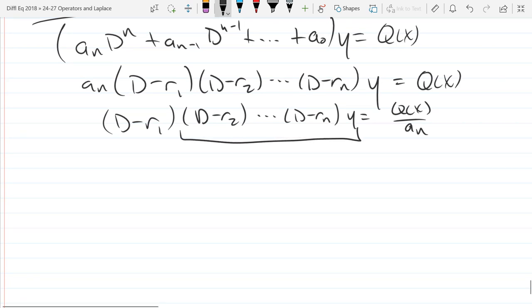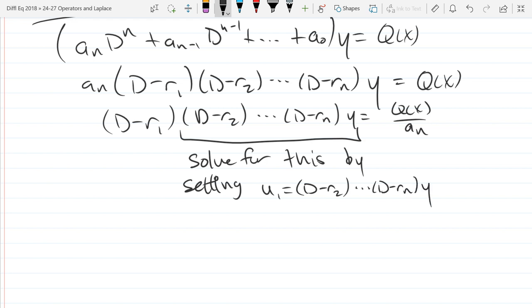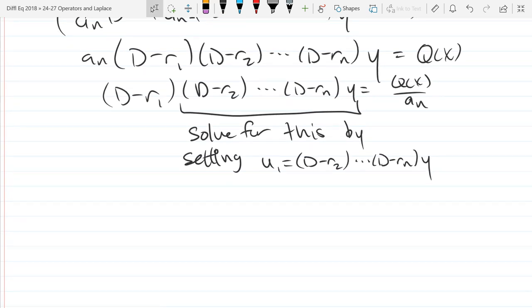And we're going to let everything except the outermost derivative equal u. I'm going to set this equal to u1 because we're about to do the same thing for the next lower order. So we're going to solve for what I underlined by setting u1 equal to (D minus r2)(D minus rn)y. Then you're going to solve (D minus r1)u equals Q(x) over a_n.